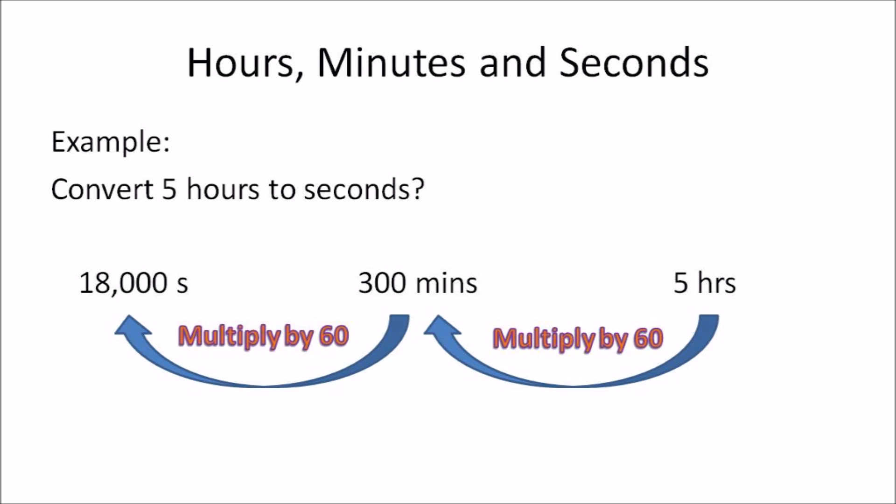In this example: convert five hours to seconds. In order to convert hours to minutes, firstly you need to multiply by 60. So five hours multiplied by 60 gives you 300 minutes. Then you need to convert the amount in minutes to seconds, so 300 minutes multiplied by 60 gives you 18,000 seconds.